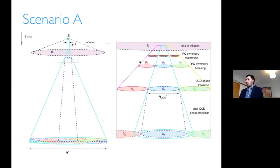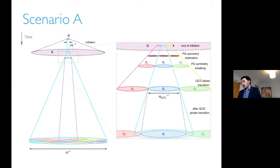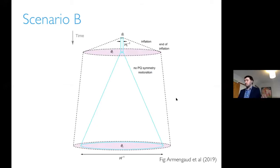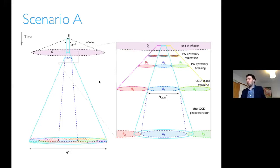In scenario A, inflation inflates our field to be an entire Hubble patch, but then spontaneous symmetry breaking happens and different Hubble patches pick different values of theta, so the current Hubble patch encompasses many different values of theta. At the end of inflation, the reheat temperature is high enough that the Peccei-Quinn symmetry is restored, and then we have random values for theta in many different patches in our universe.